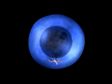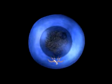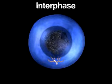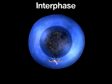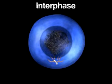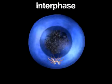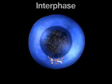Follow the diagram showing the process of meiosis. During interphase, the cell replicates its chromosomes. Each chromosome then consists of two identical sister chromatids, held together by a centromere.